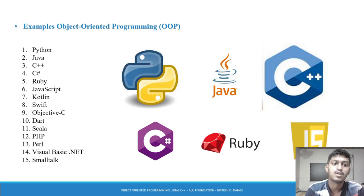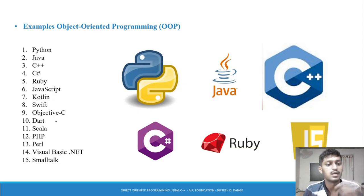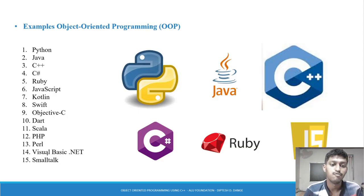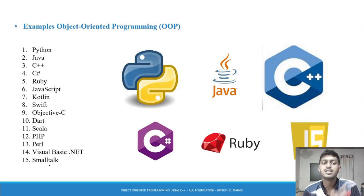The first examples are: Python, Java, C++, C#, Ruby, JavaScript, Kotlin, Swift, Objective-C, Dart, Scala, PHP, Perl, Visual Basic .NET, and Smalltalk. All these programming languages support object oriented programming.